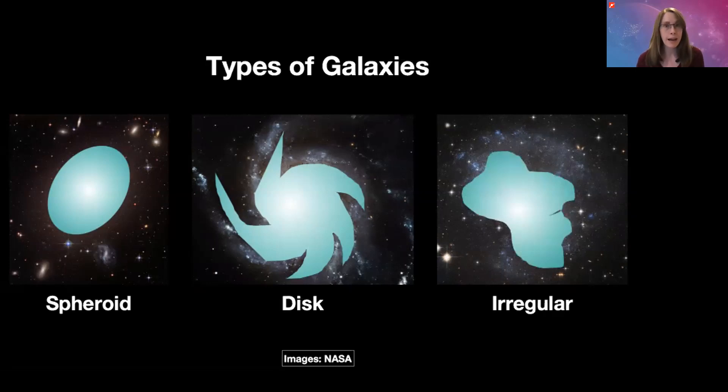The reason why galaxy shape matters is because the shape is the result of everything that's happened to that galaxy in the past - how it was initially formed, how it's interacted with other galaxies or supermassive black holes throughout its lifetime, and how quickly it's forming new stars today.